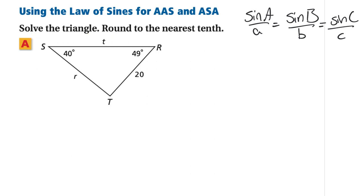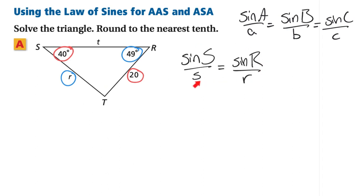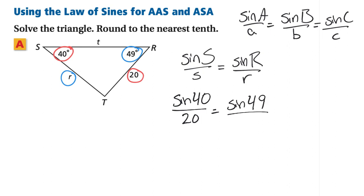Here's our first example — when it says solve the triangle, that means find all the missing pieces. I know angle S and its opposite side, and I know angle R but not its opposite side. So I'll set up a proportion using the Law of Sines with the same variable names as the triangle. Sine of angle S over side s — which is 20 — equals sine of angle R over side r, which is what we're trying to find. We don't want to calculate the sine values yet, keeping things exact until the end.